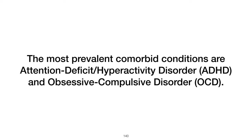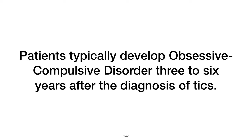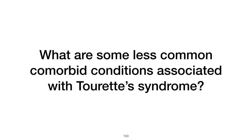What are the most prevalent comorbid conditions in patients with Tourette's syndrome? The most common comorbid conditions include ADHD and obsessive-compulsive disorder (OCD). Patients typically develop OCD about three to six years after the onset of tics. Less common comorbid conditions include autism spectrum disorder, anxiety, depression, learning disorders, disruptive behaviors, impulse control issues, and conduct disorder.